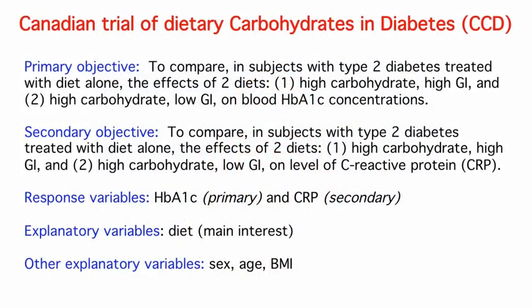Let's start with a quick reminder of where we are. We're looking at the Canadian Trial of Dietary Carbohydrates and Diabetes. We're looking at people with type 2 diabetes and we're giving them a high carbohydrate diet. Some have been assigned to follow a diet with high glycemic index foods and the rest will be taking a diet with low glycemic index foods. Our primary objective is to see the effects of these diets on blood HbA1c concentrations, which is a measure of diabetic control. As a secondary objective, we're interested in the risk of heart disease, so we'll look at the level of C-reactive protein in the blood. In addition to diet as an explanatory variable, we'll also take a look at sex, age, and BMI of the subjects.